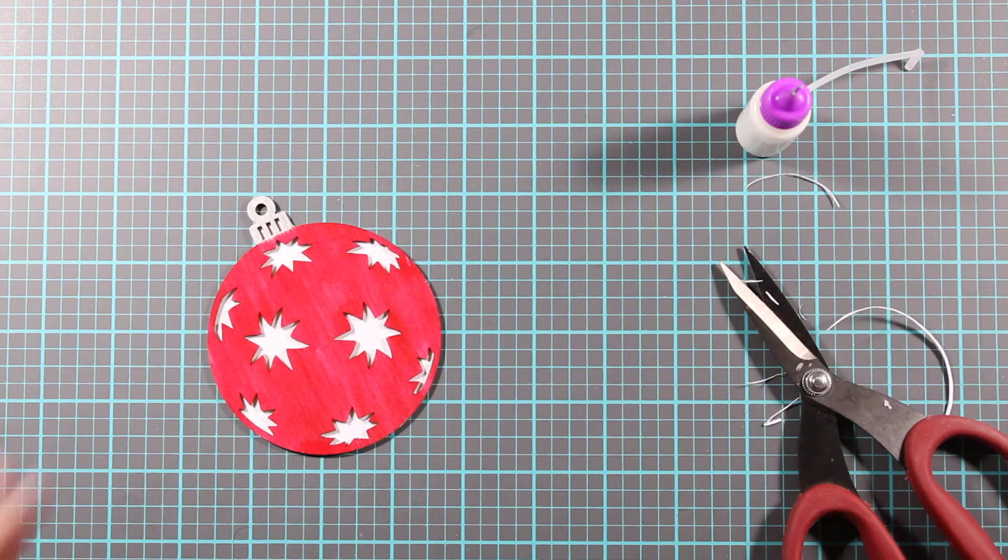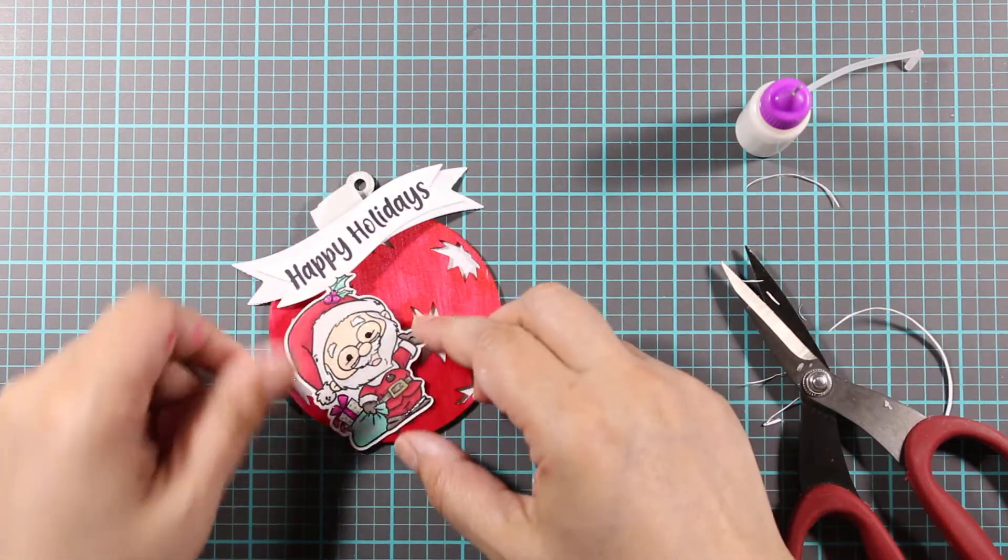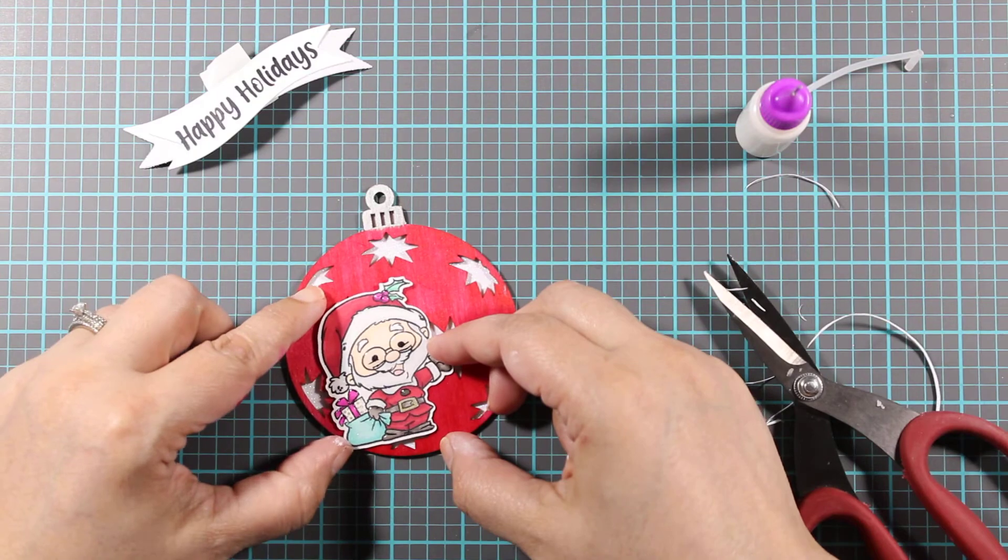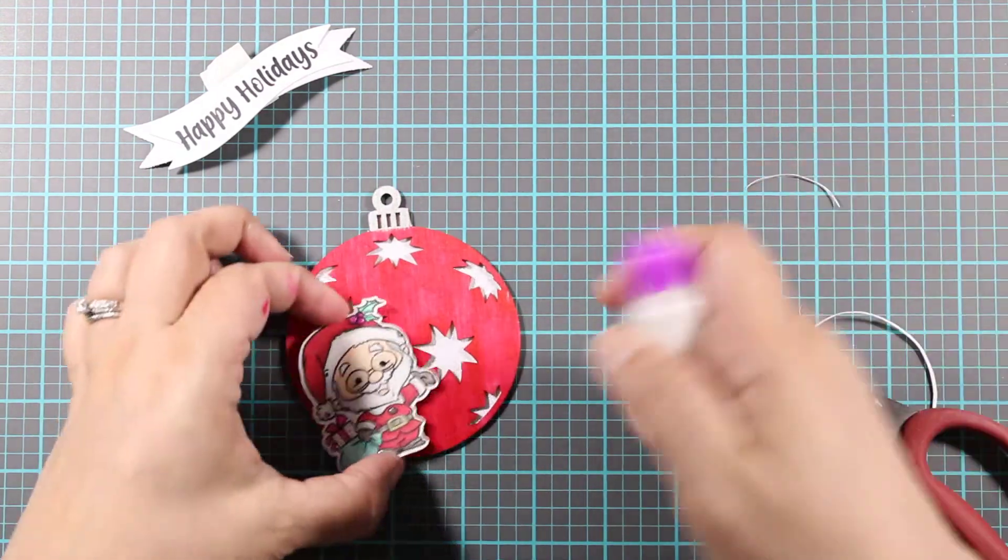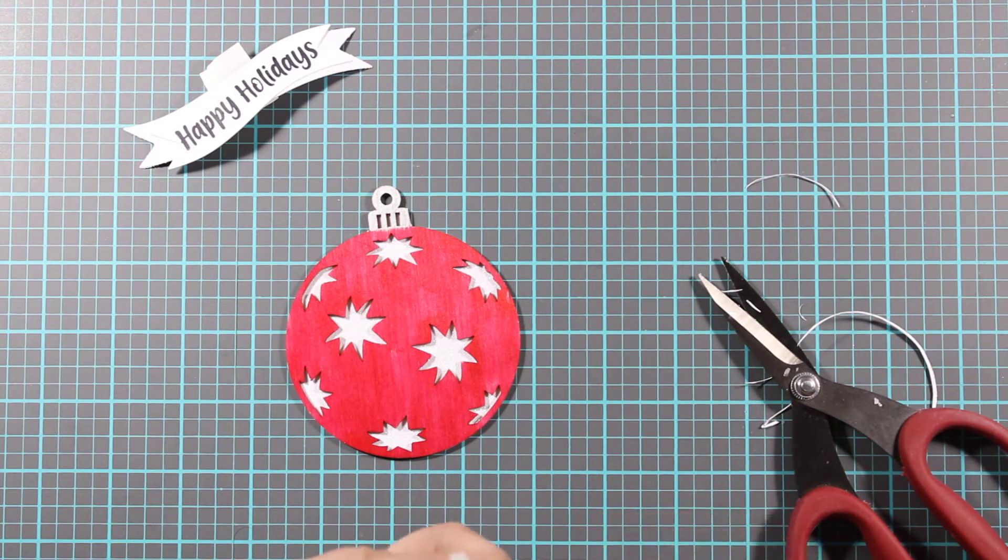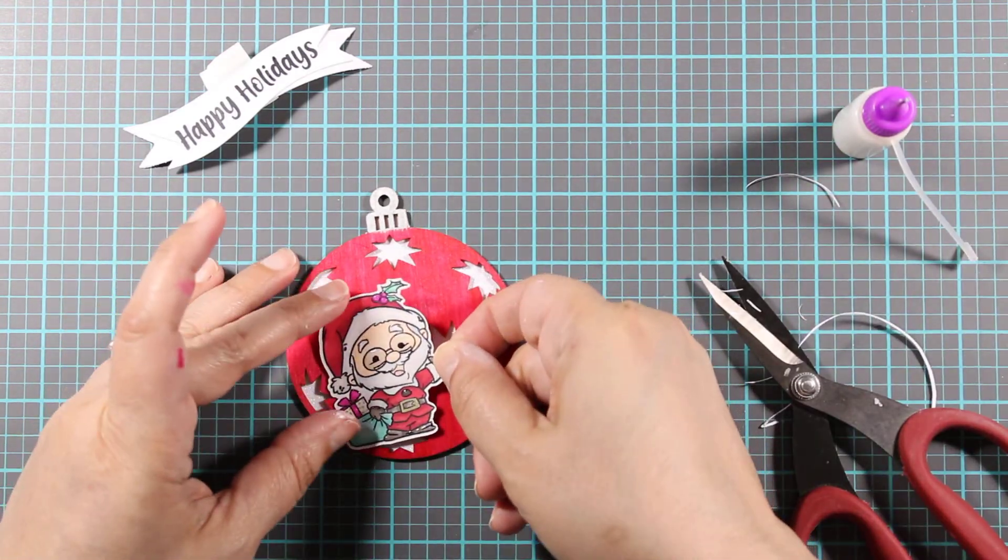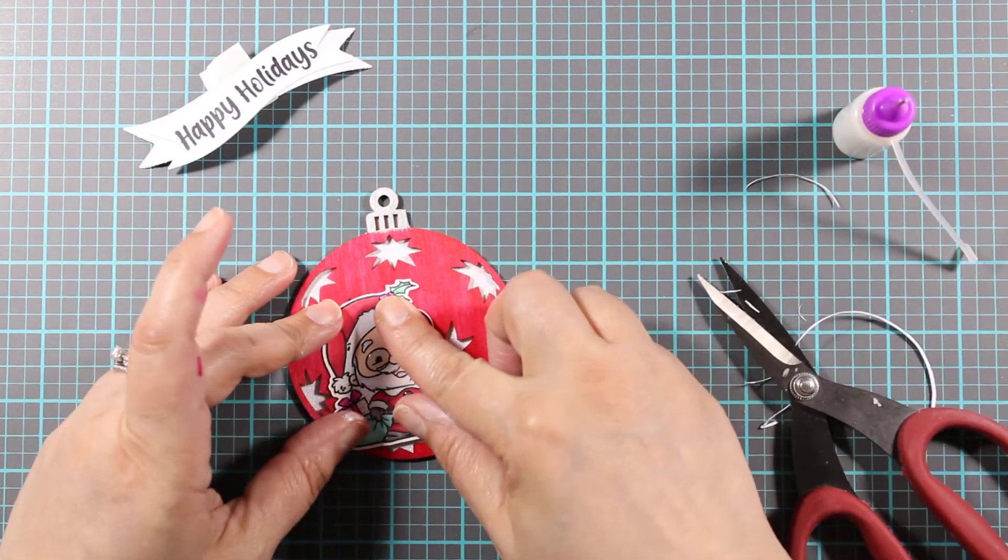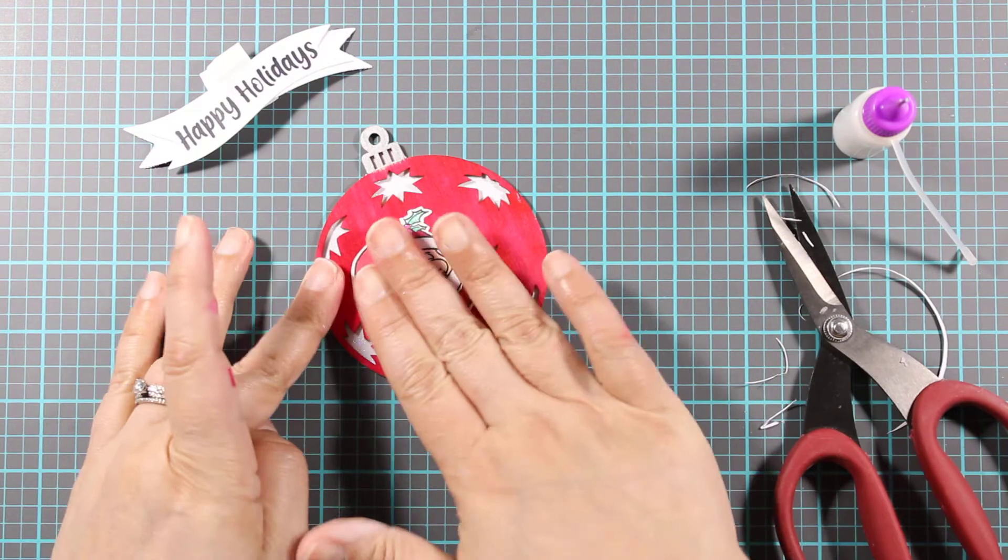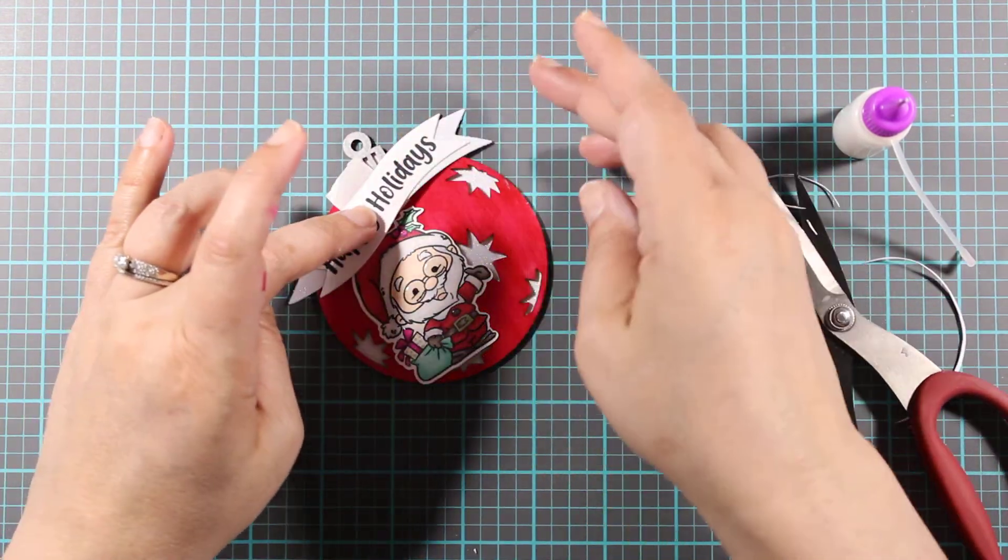So I'm gonna put Santa Claus in this time. Before we put down the ribbon, I would tack him down. Just put enough glue to make sure that he's covered. Eyeball it again and see exactly where you want it. It's good enough for me, and then we can add the banner.